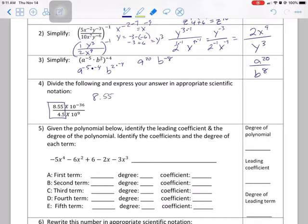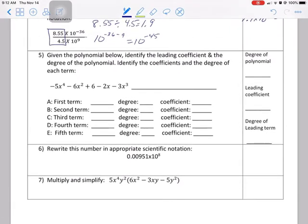Divided by 4.5 equals 1.9. 10 to the negative 36 minus 9, right, is going to be 10 to the negative 45. So my final answer is 1.9 times 10 to the negative 45.